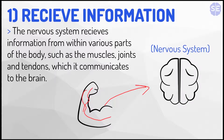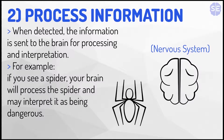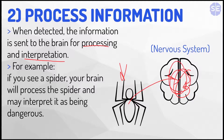Now on to the second basic function: processing information. When detected, the information is sent to the brain for processing and interpretation. For example, you see a spider, and the brain will process the spider as dangerous. So it has to process the information — it can't just receive it.